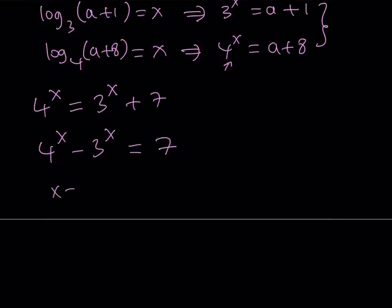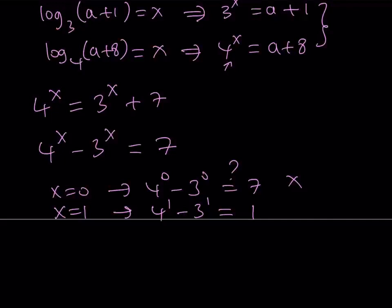So for example, if you replace x with 0, you get 4^0 minus 3^0 equals 7. Is that true? That's false. It doesn't work because 1 minus 1 equals 0. If x is equal to 1, then I get 4^1 minus 3^1 equals 1. And the answer is no. It's false.